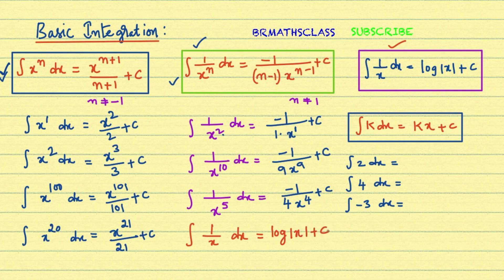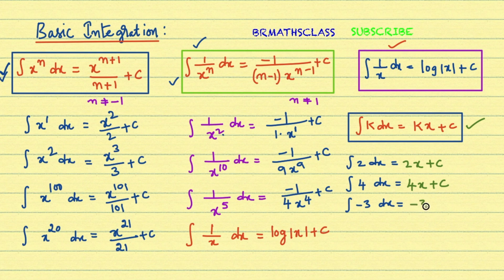The fourth formula: integral of k dx is kx plus c, where k is a constant. For example, integral of 2 dx is 2x plus c. Integral of 4 dx is 4x plus c. Integral of minus 3 dx is minus 3x plus c, since minus 3 is also a constant.